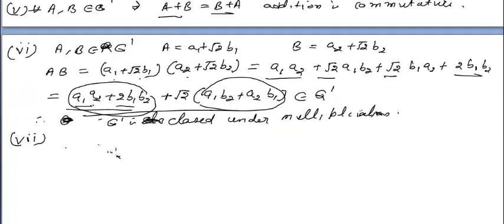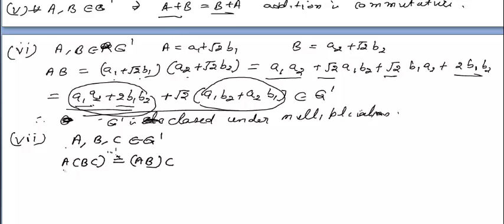The next property is associativity under multiplication. For a, b, c belonging to Q', we have to show (a·b)·c = a·(b·c). The multiplication is lengthy but you can verify it at your end — when you multiply b and c then multiply with a, and when you multiply a and b then multiply with c, both sides are equal. So Q' is associative under multiplication.